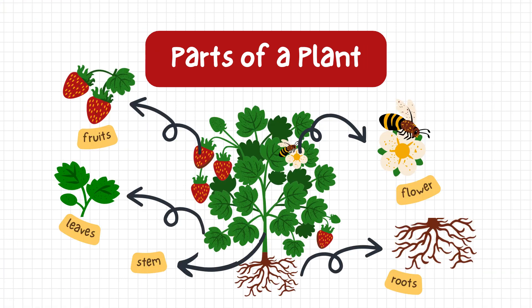Parts of a plant. The parts of a plant include roots, stem, leaves, flowers, and roots. Those are the parts of the plant.